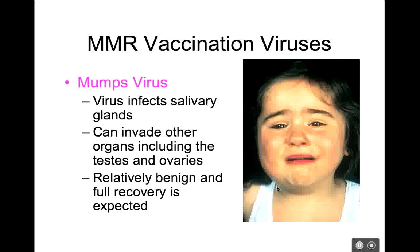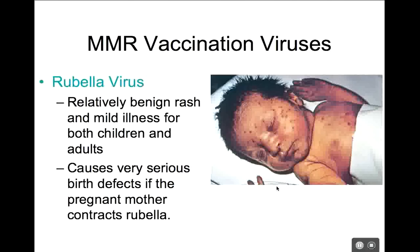So for mumps: it infects the salivary glands, we worry about it spreading to the testes and ovaries, it's quite painful but not usually causing long-term complications. For MMR, we have measles, mumps, and rubella. Rubella is also a relatively benign rash — a mild illness for both children and adults. Rubella is sometimes called German measles.